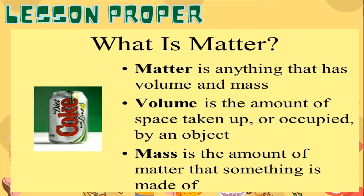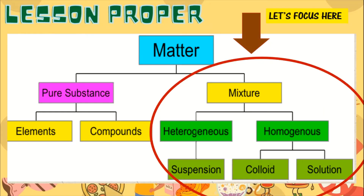A Coke in a can is an example of matter. Actually, almost everything that surrounds us is made up of matter. This graphic organizer shows that matter has two subdivisions: pure substance and mixture. But let's focus on mixture.